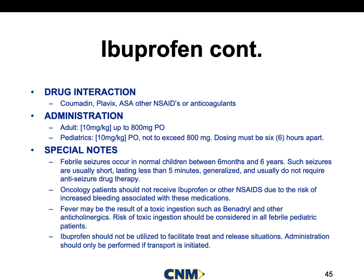Continuing on with ibuprofen, there are some drug interactions. Most of them are with blood thinners, or anticoagulants. Your aspirins — some of the famous blood thinners are Coumadin, also known as Warfarin, and Plavix. People that have some kind of cardiac issue or are at risk of stroke or some other clotting disorder could be on some kind of anticoagulant. Administration is 10 milligrams per kilogram for the adult, up to 800 milligrams orally. Pediatrics is the exact same, however not to exceed 800 milligrams, and dosing must be six hours apart.